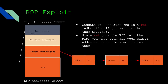Here's a diagram to help explain. Gadgets you use must end in a return instruction — this is why it's called Return Oriented Programming. The RET instruction pops an address off the top of the stack and places it in the instruction pointer. So if we put our gadget addresses onto the stack, we can have it run some code and then return, which pops the next gadget off the stack. You can create what's called a ROP chain — a bunch of ROP gadgets that run after each other — which gives you basically arbitrary code execution.